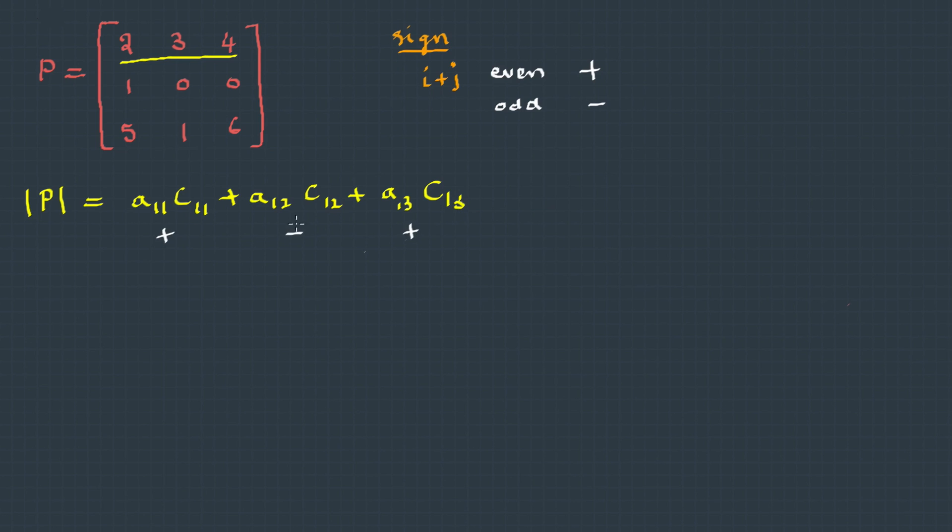So if I rewrite this equation in terms of minors, this will be here. The minus sign for the minor is because of the cofactor which turns it to negative. Now let's substitute the values. a11 is the first element, 2, multiplied by its minor.